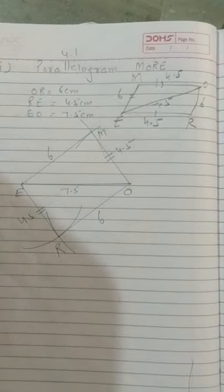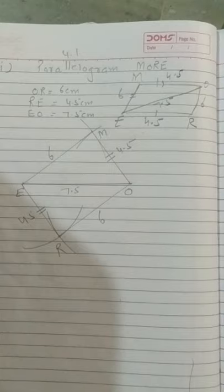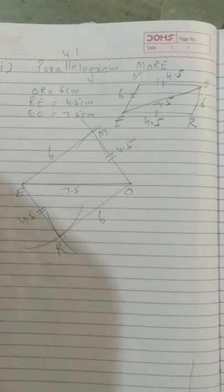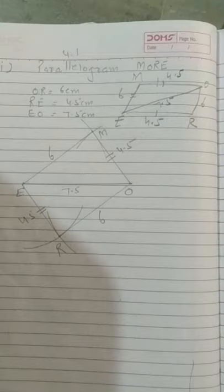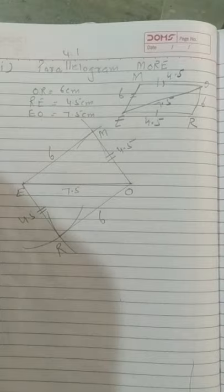Again the steps of construction — listen carefully. Step 1: Draw E.O. = 7.5 cm. Step 2: With E as the center, draw an arc of radius 6 cm. Step 3: With O as the center, draw another arc of radius 4.5 cm, which cuts the previous arc at point M. Step 5: Join E.M. and O.M. Step 6: With E as the center and radius equal to 4.5 cm, draw an arc to the other side of E.O. Step 7: With O as the center and radius equal to 6 cm, draw an arc which cuts the arc of the previous step at point R. Step 8: Join E.R. and O.R. Last step: M.O.R.E. is the required quadrilateral.